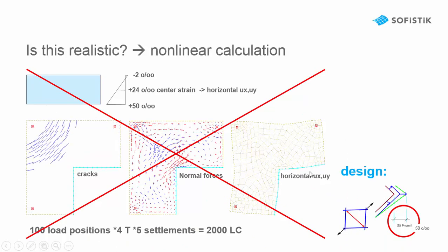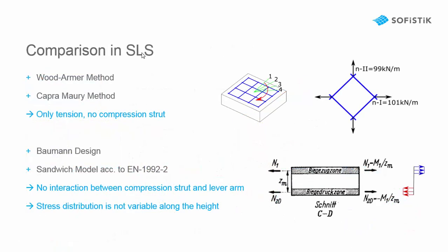This is not practical in a normal way. We usually make a linear analysis of our forces. The linear forces are superposed. And then we want to make a design of a single element. And then we get this compression strut and the high strain. If we compare the design procedures in the SLS, we see the Wood-Armor method and the Capra-Mauri method will only get tangent in all directions for this element. And no compression strut will occur. The Bauman design and the sandwich model also have a big disadvantage. Because the tension in the two zones would give a constant stress in the two disks.